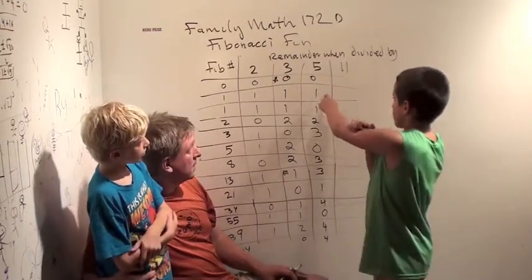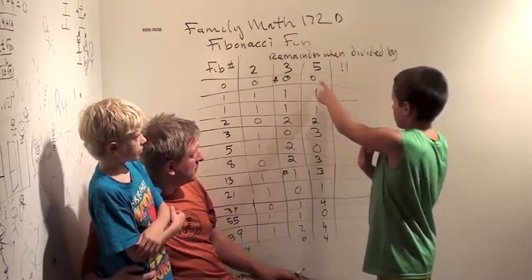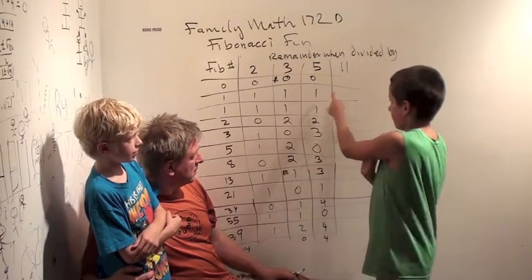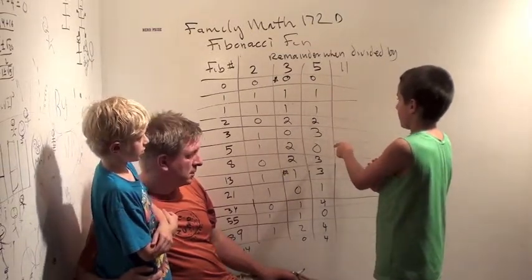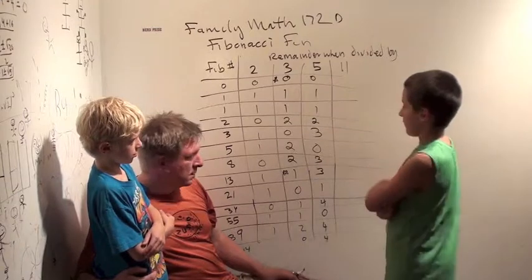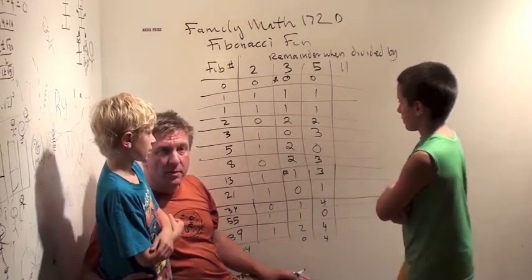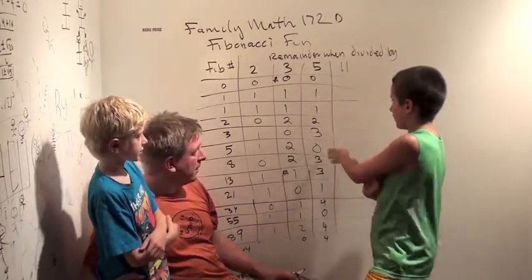Hmm, well, this 0 plus 1 is 1, 1 plus 1 is 2, 1 plus 2 is 3, but then 2 plus 3 doesn't equal 0. So it worked for a little bit, but then it falls apart.